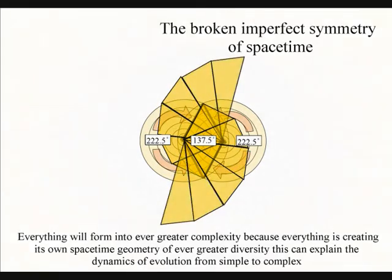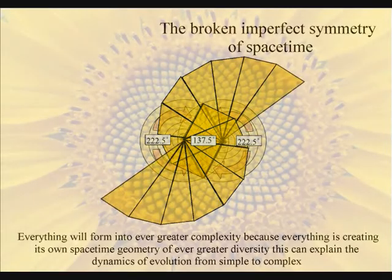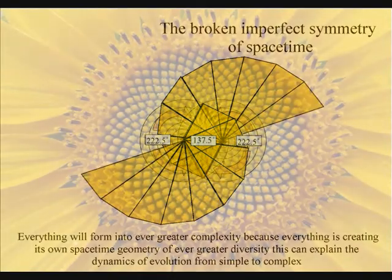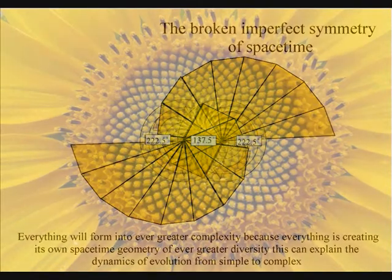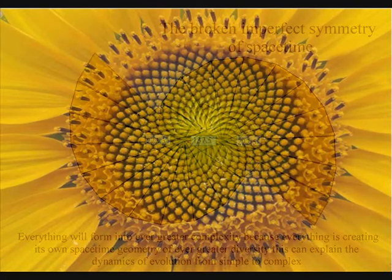The reason why there is something rather than nothing is that a process of spherical symmetry forming and breaking will naturally form entropy or disorganization with a built-in potential for ever greater symmetry formation.